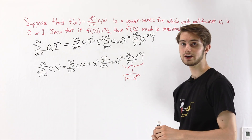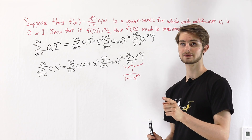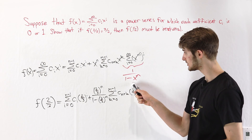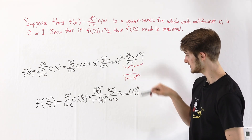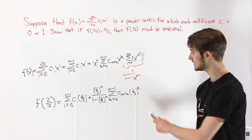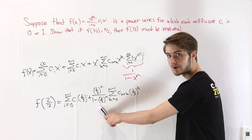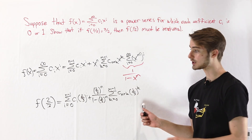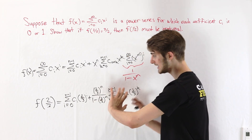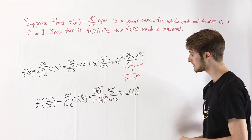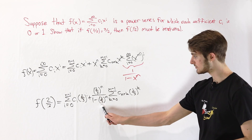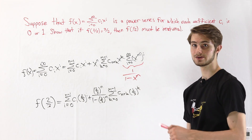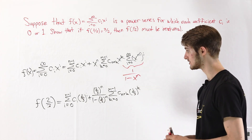Now we're going to evaluate f(2/3). We take our function with the simplified geometric series — 1 over (1 minus x^m) — and plug in 2/3. To simplify the resulting fraction, since we have (1 minus (2/3)^m) in the denominator, I'm going to multiply the top and bottom by 3^m to clear it.